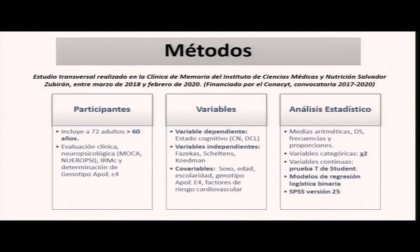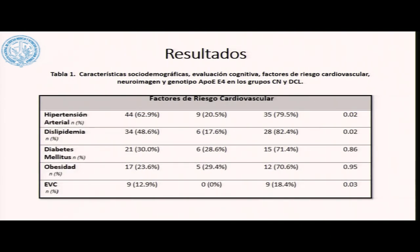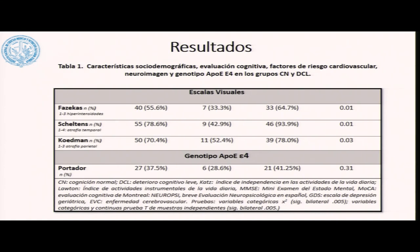En los resultados, comparando cognitivamente sanos contra aquellos con deterioro cognitivo leve, observamos que los pacientes con deterioro cognitivo leve tenían menor escolaridad y menor puntuación en escalas como el Montreal Cognitive Assessment, MoCA y el Neuropsí. Con respecto a comorbilidades, el grupo con deterioro cognitivo leve era más hipertenso, tenía mayor dislipidemia con diferencias estadísticamente significativas, y una mayor carga de enfermedad vascular cerebral. En las escalas visuales, los pacientes con deterioro cognitivo leve tuvieron mayor carga de lesión vascular, mayor atrofia temporal medial y mayor atrofia parietal.